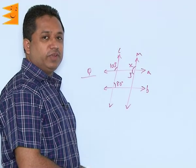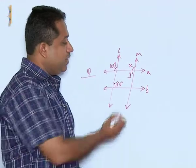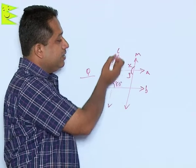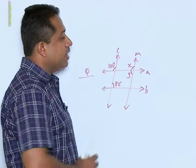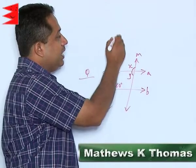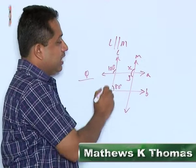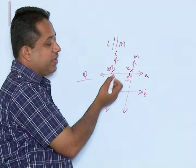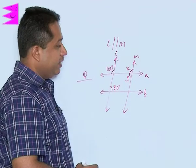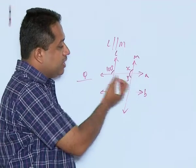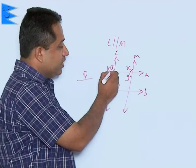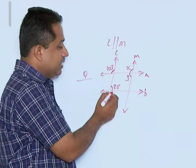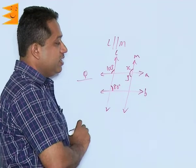Let us take another example where we have to find out the unknown values x and y. It is given that L and M are parallel lines, and we have to use the properties of parallel lines and angles to find out the values of x and y. What is given to us is that this angle here is 100 and this angle here is 80 degrees.